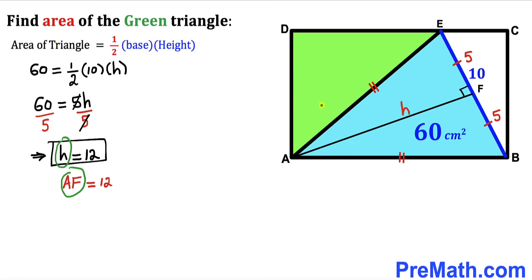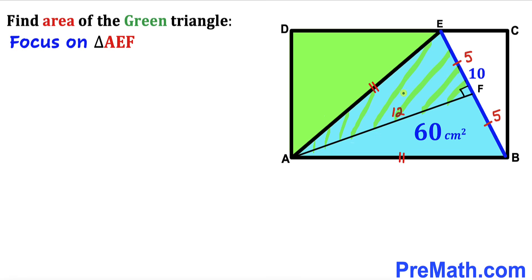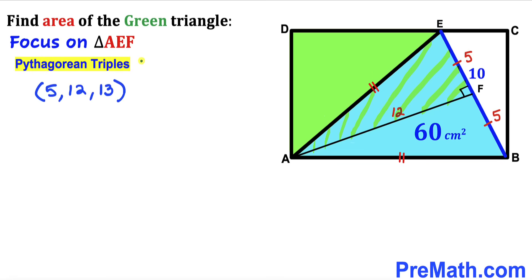Our height h is segment AF, so AF = 12 cm. Now focusing on right triangle AEF, whose side lengths are 12 and 5. Recalling the Pythagorean triplet 5-12-13, the unknown side AE turns out to be 13 cm.